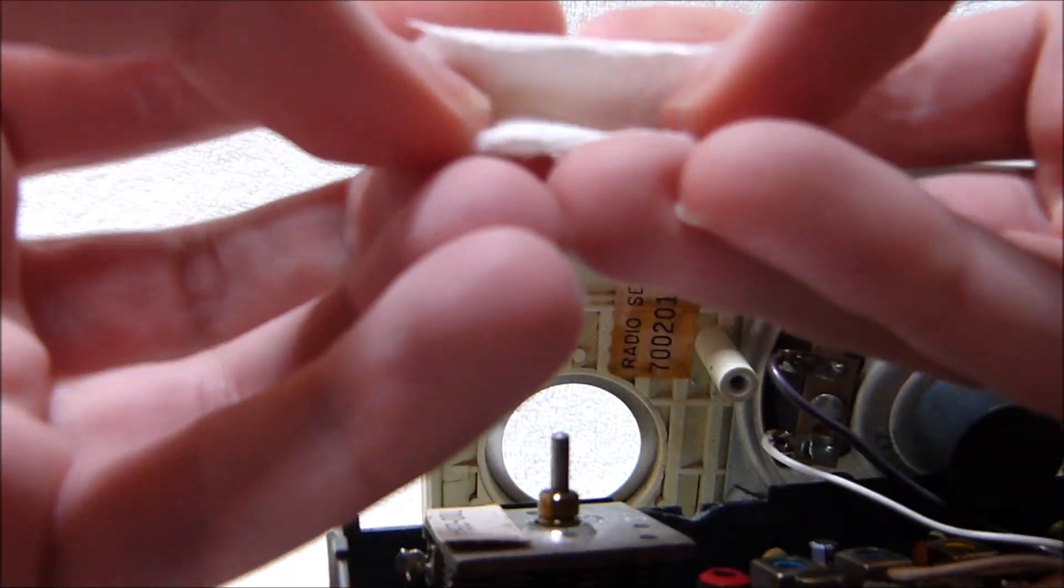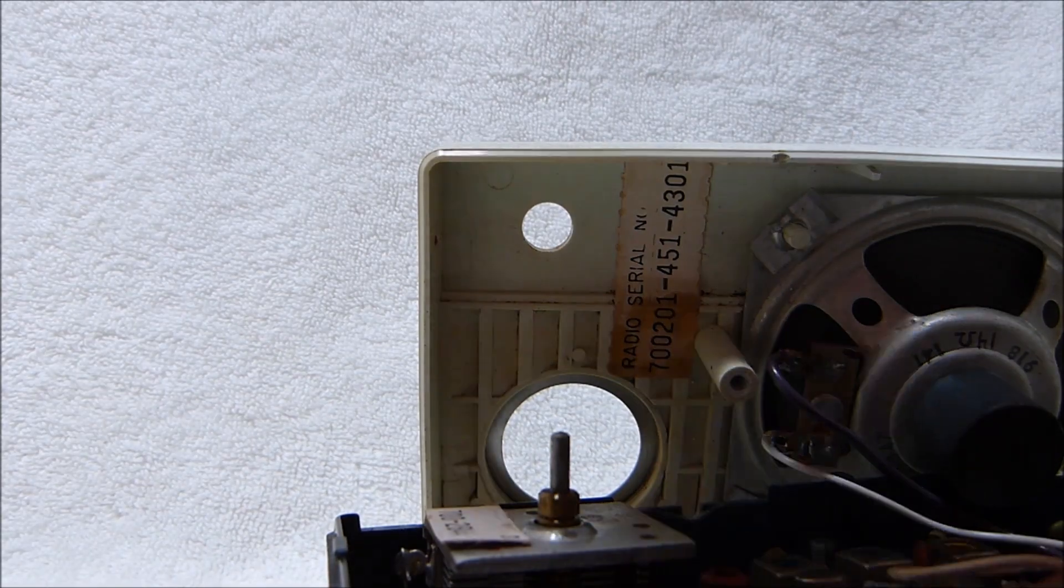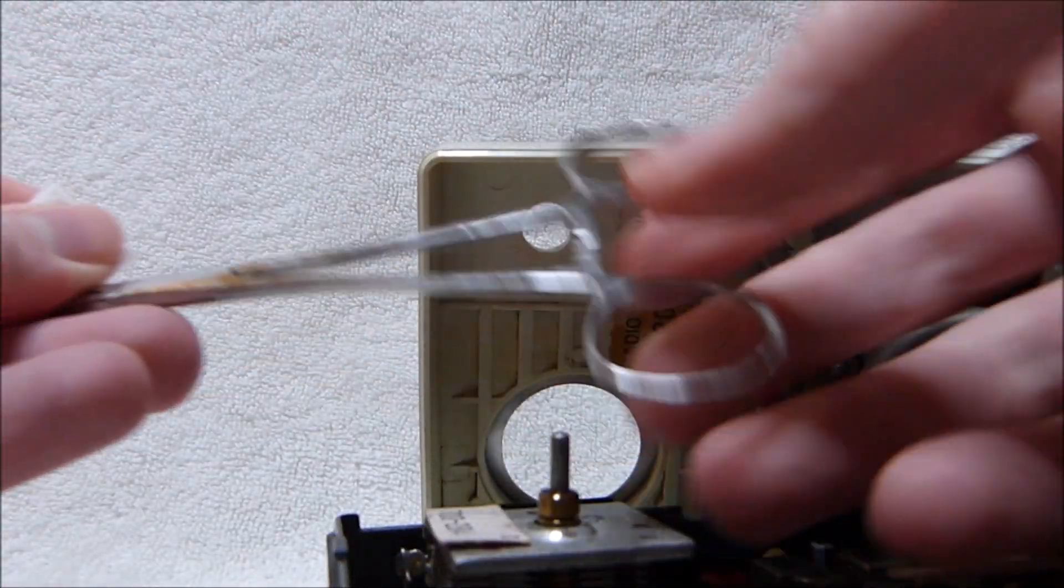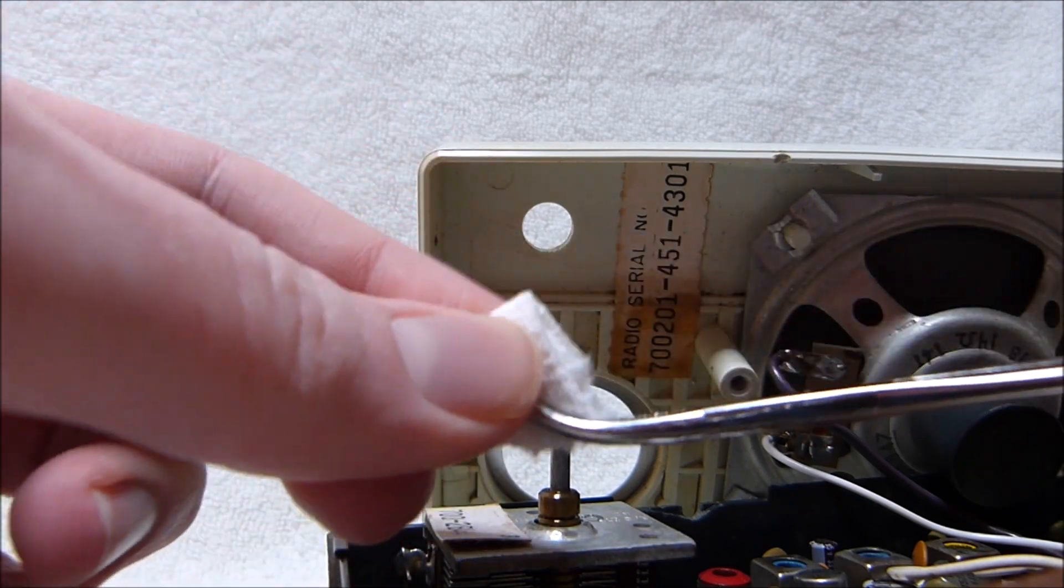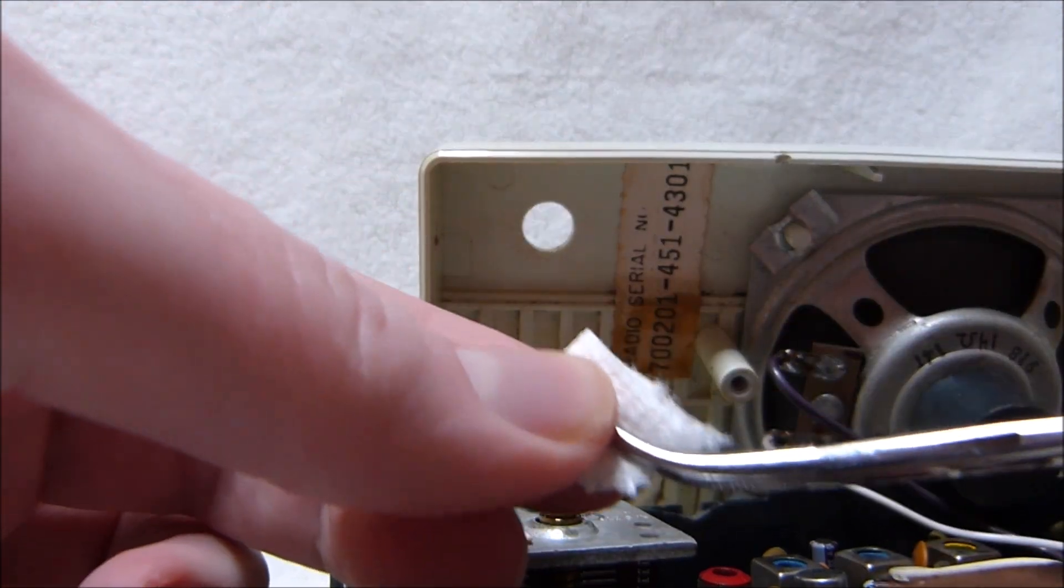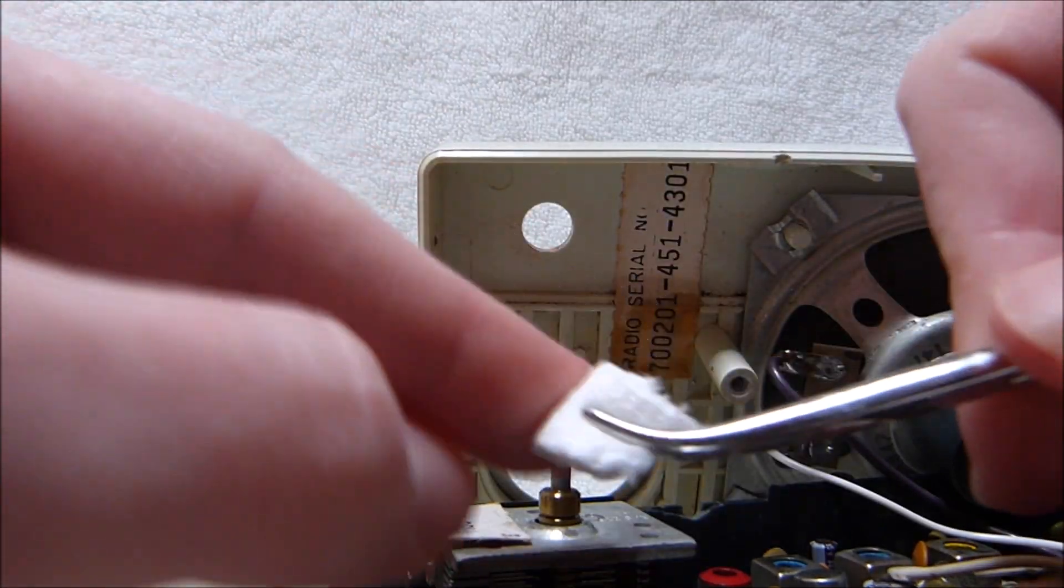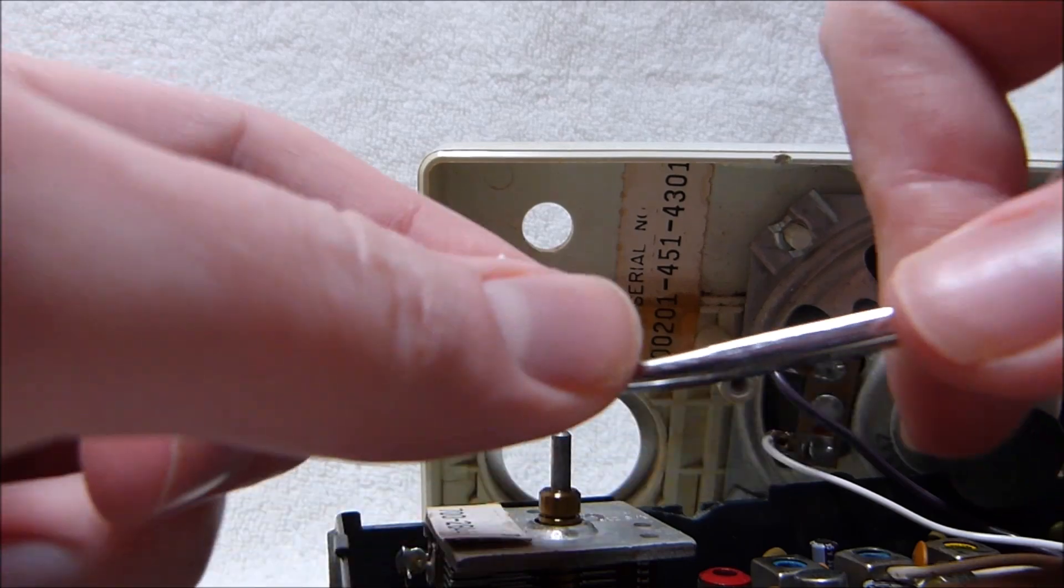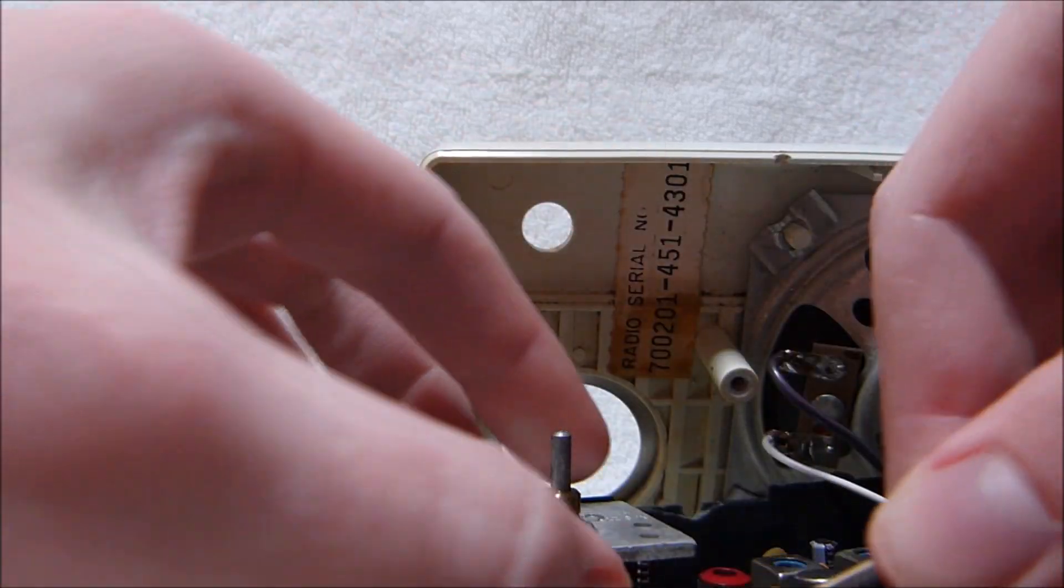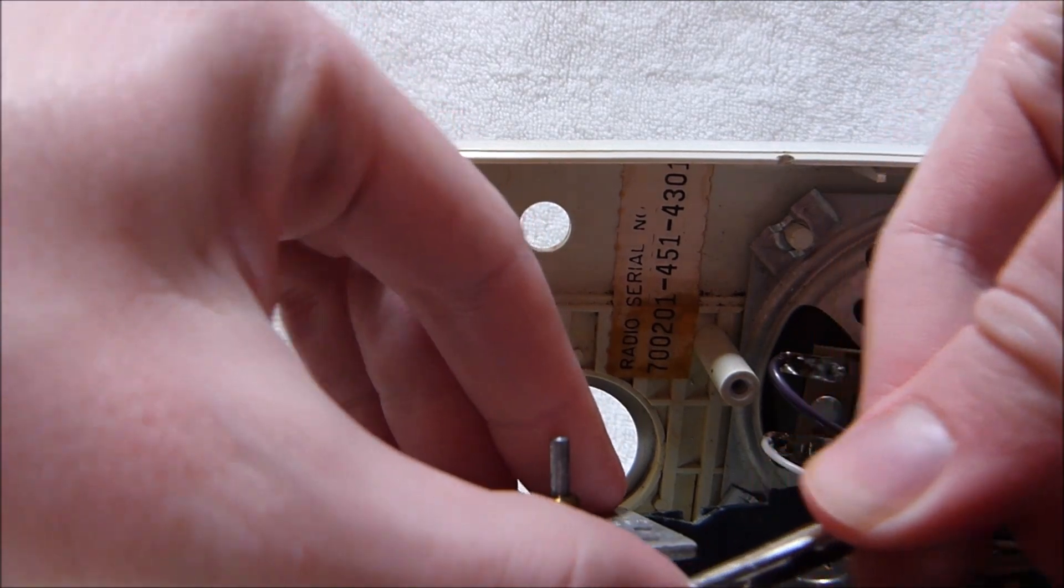So I take a paper towel like this, fold it up, and I take like a little hemostat thing, like a little surgical hemostat, I've got a curved one. And I grip the paper towel like that, it's held in there, and you've got this bit of it sticking up. And you get underneath here and you scrub the bearing.